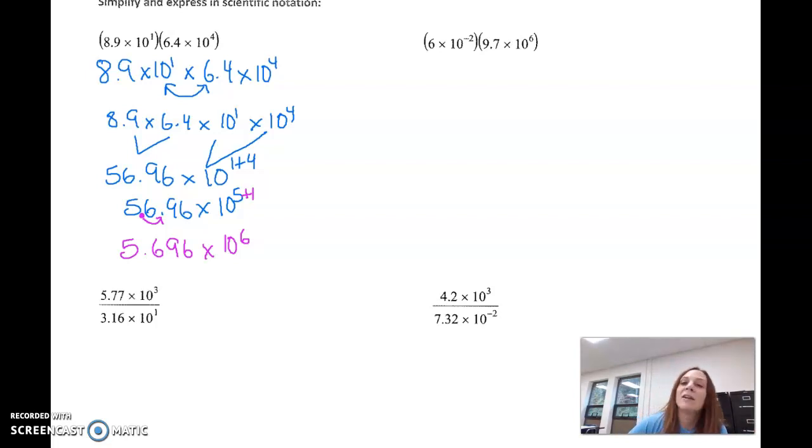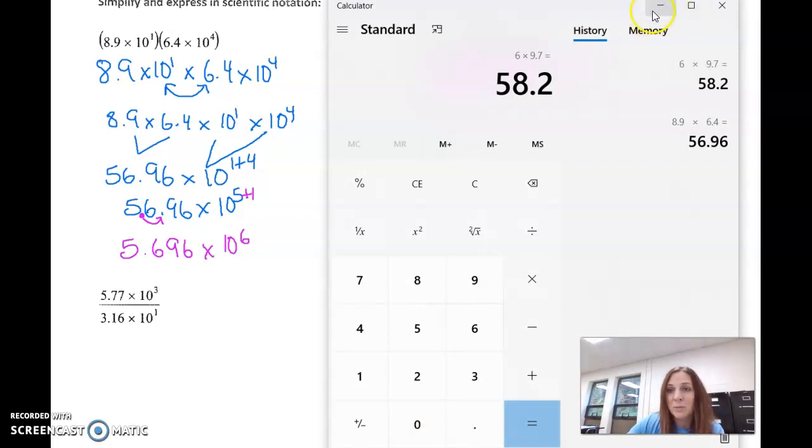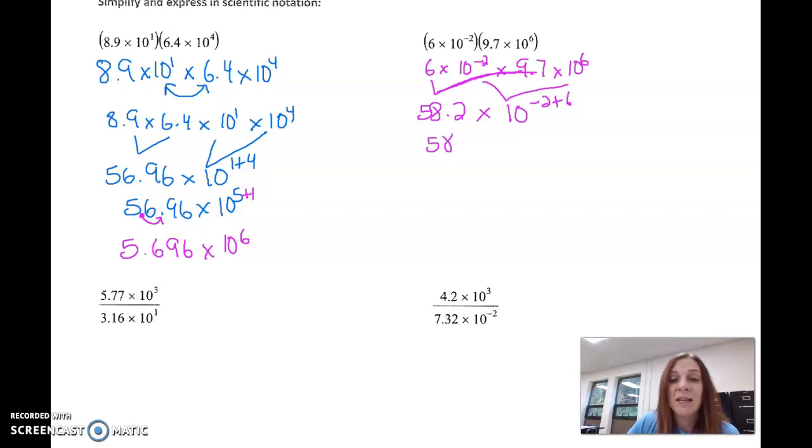All right, so let's look at another example. Again, this is all multiplication: 6 times 10 to the negative second times 9.7 times 10 to the sixth. We can multiply in any order, so I'm going to start by multiplying 6 by 9.7. If I go 6 times 9.7, I get 58.2. So I get 58.2 times, now my exponents, same base, add the exponent. So we end up negative 2 plus 6. We have 58.2 times 10 to the fourth.